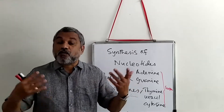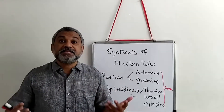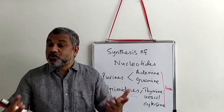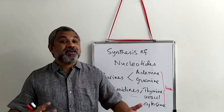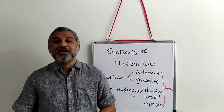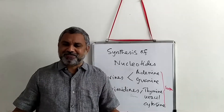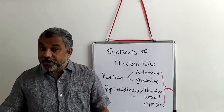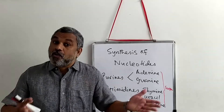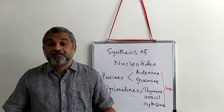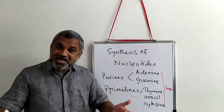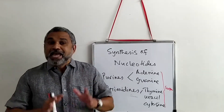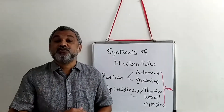Nucleotides are found in phospholipid synthesis via CDP, and in signal transduction — for example, cyclic AMP. They can also act as allosteric molecules, such as ADP and ATP. Some are components of coenzymes like NAD, NADP, FMN, FAD, Coenzyme A, and tetrahydrobiopterin.